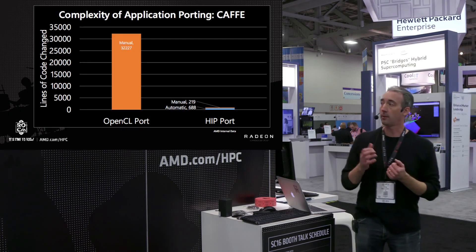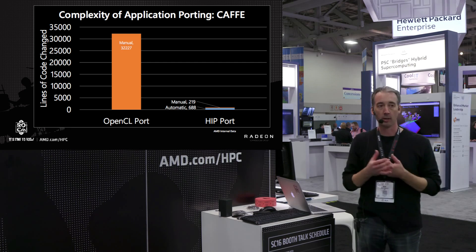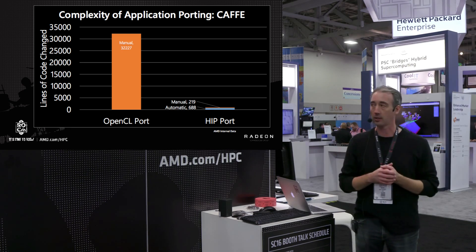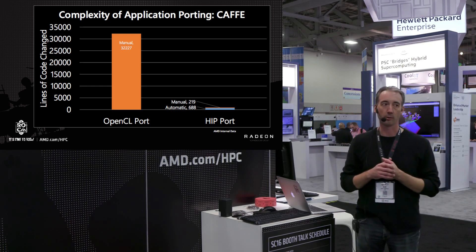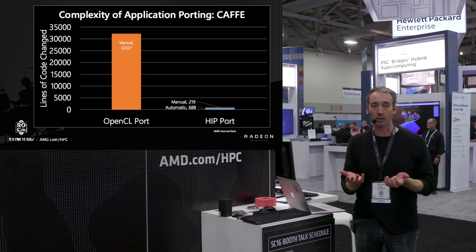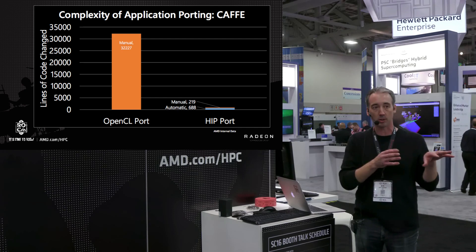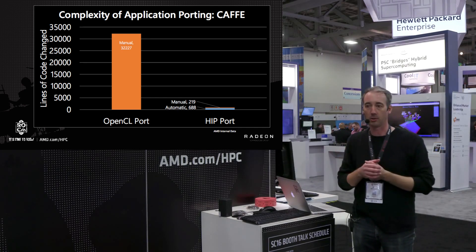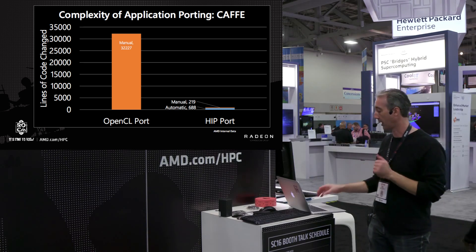This shows the old way of doing things. We do still support OpenCL, and there's an OpenCL port of CAFE that exists. But the problem was there's a huge number of lines of code required — we had to change 30,000 lines of code in that port. Remember, the original application only has 55,000 lines. Part of the reason is we're going from a C++ application to OpenCL, which is a C dialect, so there's a lot of manual work required.